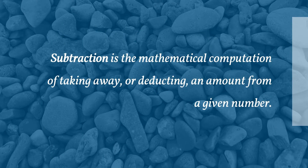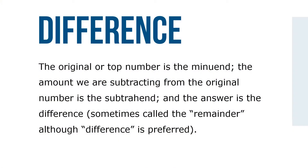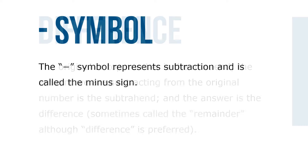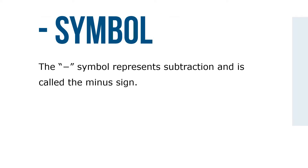Subtraction is the mathematical computation of taking away, or deducting, an amount from a given number. The original or top number is the minuend, and the amount we're subtracting from the original number is the subtrahend, and the answer is the difference — sometimes called the remainder, although difference is preferred. The minus symbol represents subtraction and is called the minus sign.